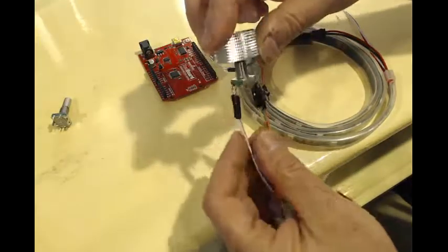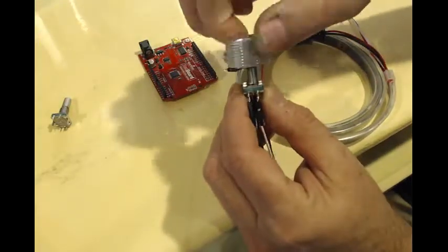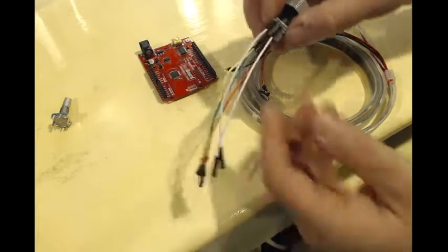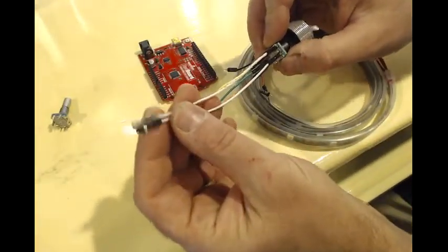This is the same rotary encoder with a knob attached to the top to make it convenient and jumper wires soldered onto the pins to allow it to be more easily connected to an Arduino.